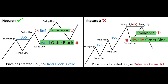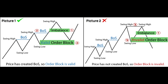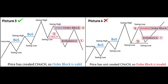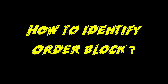In picture one, the order block zone is valid because the price has created both a BOS and an imbalance — the BOS further reinforces that the market is in an uptrend, so when price enters the order block zone it is likely to bounce back to the main trend. In picture two, although price created an imbalance it could not create a BOS, indicating the trend has weakened, so the order block is not reliable. In picture three, the price created a CHoCH signaling a price reversal, so the order block is valid. In picture four, although an imbalance appeared, no CHoCH occurred, making it impossible to predict price direction — so the order block is not valid.